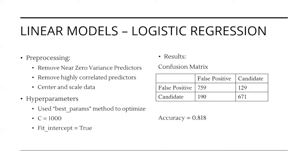The next linear model we considered was logistic regression. Before fitting, we had to remove any predictors that have a near-zero variance, remove any highly correlated predictors, and center and scale the data. We followed the same model optimization approach as before, and found the best hyperparameters to be c equal to 1000, and the fit intercept equal to true. Here is the confusion matrix for the optimal model, which has an accuracy of 0.818.